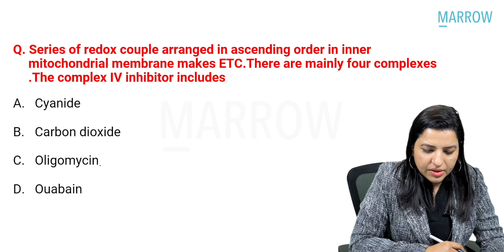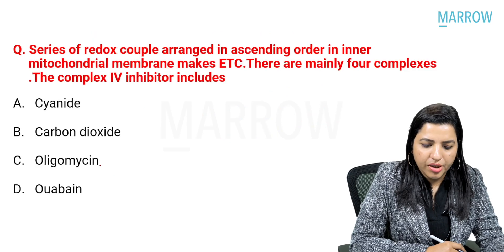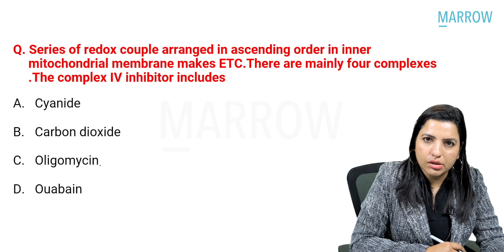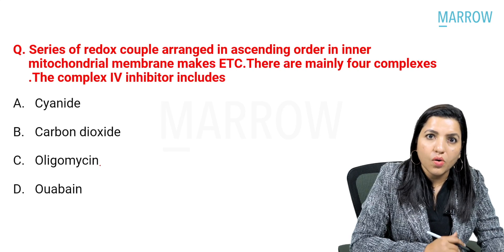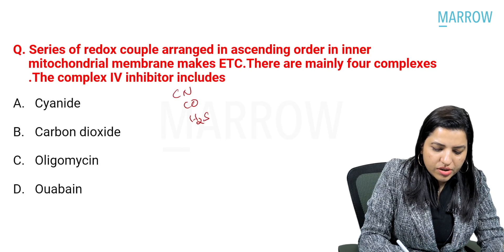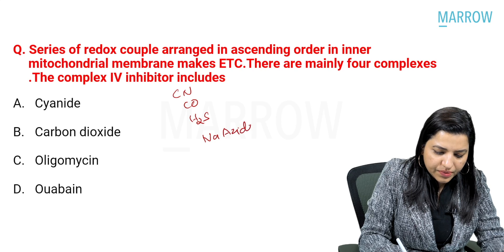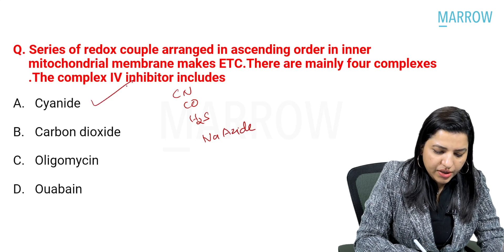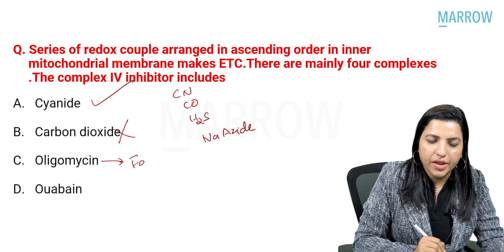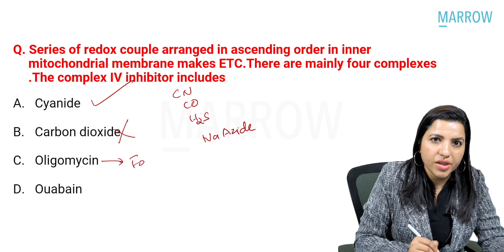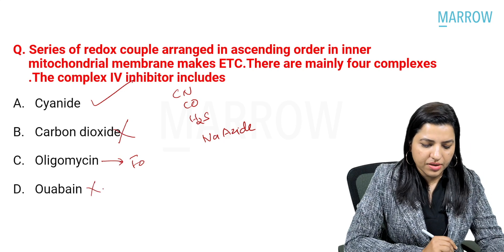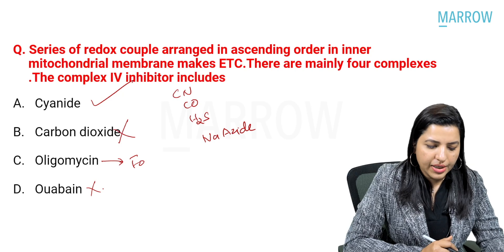Series of redox couples arranged in ascending order in the inner mitochondrial membrane make the electron transport chain. There are mainly four complexes, and the complex four inhibitors include: the complex four inhibitors are all gases — cyanide, carbon monoxide, hydrogen sulfide, and sodium azide. So the answer is cyanide, not carbon dioxide. Oligomycin blocks the FO subcomplex of ATP synthase. So the answer is cyanide.